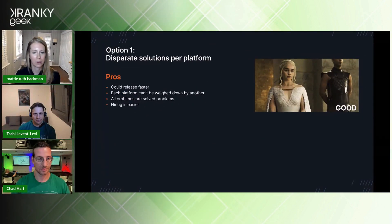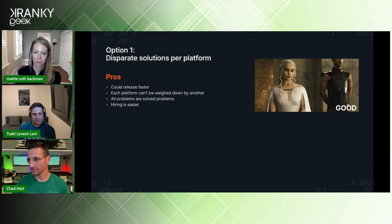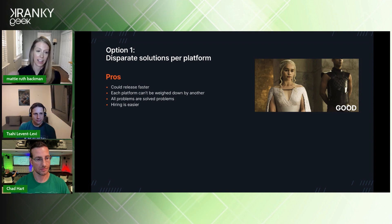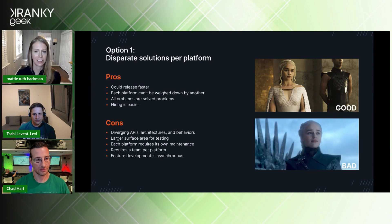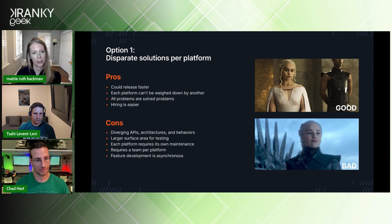Step three in the quest was to consider our options — there were really only two we considered. Option one was to do like most people and simply build disparate solutions for every platform. This has the advantages of being able to release faster, not allowing any one platform to be bogged down by another, all the problems here would be solved problems, and hiring is easier. The downsides are you end up with diverging API designs and architectures, which often result in behavioral differences. You have a much larger surface area for testing, each platform requires its own maintenance and team, and feature development is asynchronous per platform — so every feature has to be built, tested, and documented multiple times.